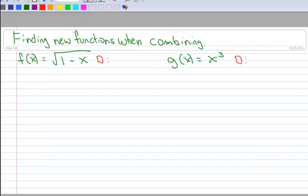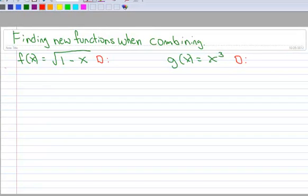In this video, we're going to find new functions when we're combining functions through arithmetic operations. So here's an example, and this one comes from your text also, in case you wanted to follow along. It's number 18 from your text. So f(x) equals the square root of 1 minus x, g(x) equals x cubed.